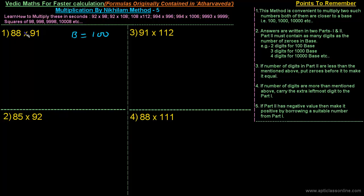88 is 12 less than its base. 91 is 9 less than 100. So we have the deficiencies: 12 and 9.